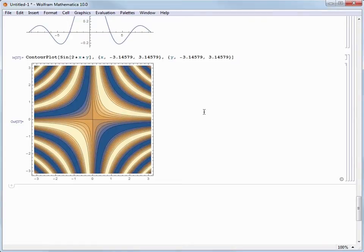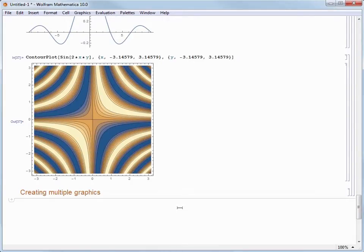Now you can graph multiple functions on the same set of axes, so let's take a look at how we do that next. First, we'll create a new subsection and call it Creating Multiple Graphics, and then arrow down to start a new input cell, and we'll use Freeform Input to ask for plot sine of x and sine of x over x to see what that looks like.